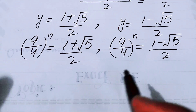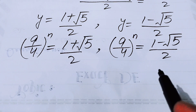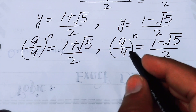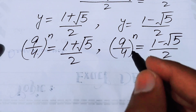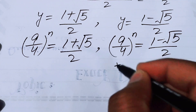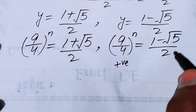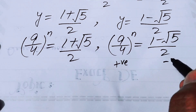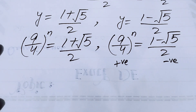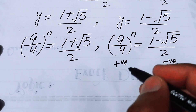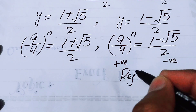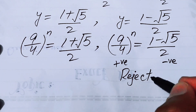Focusing on the second case: the left-hand side is an exponential function, which always gives a positive value. However, (1 − √5)/2 is negative, so this is impossible. We reject this case.